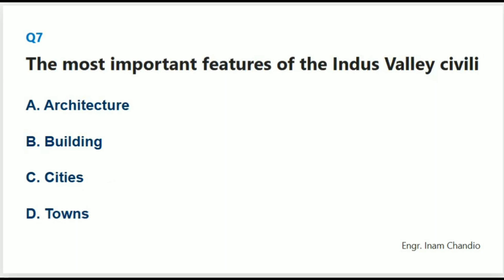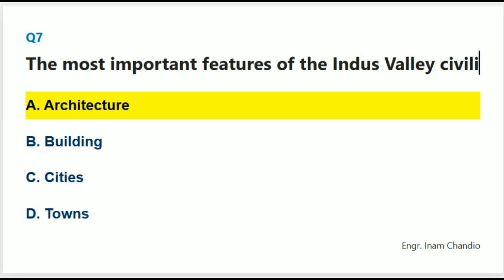The most important features of the Indus Valley civilization are town planning and: The correct answer is A. Architecture.